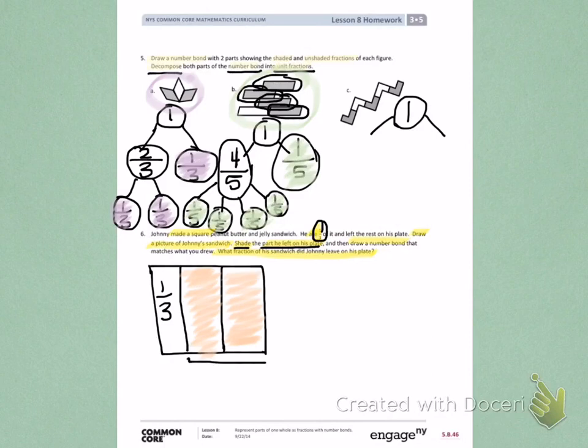When I look at what is shaded, I see two parts are shaded, and there are three parts in all. Giving me two-thirds was left on his plate. As a number bond, Johnny had one whole sandwich. He ate one-third of that sandwich. He left on his plate what we shaded, which was two-thirds.